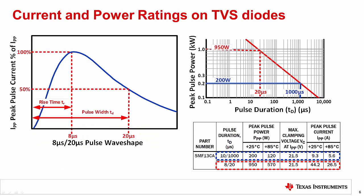This slide shows a brief overview of the TVS diode's power and current specifications. The key point to understand is that the peak pulse power rating is a transient rating for a finite pulse duration. There are two commonly specified transient pulse durations: 10 by 1,000 microseconds and 8 by 20 microseconds. The pulse duration is broken into two sections — the rise time and the pulse width. For example, an 8 by 20 microsecond pulse has an 8 microsecond rise time and a 20 microsecond pulse width. The peak pulse power rating for the 1,000 microsecond pulse width is lower than for the 20 microsecond pulse. Most manufacturers will provide a curve to convert peak pulse power for different pulse widths — for example, a 1,000 microsecond pulse with a 200 watt rating can be converted to a 20 microsecond pulse with a 950 watt rating.